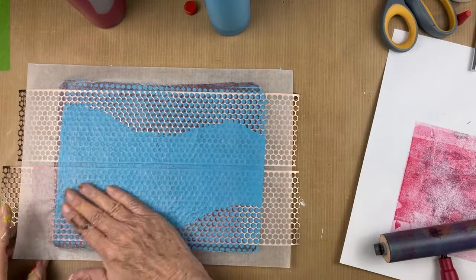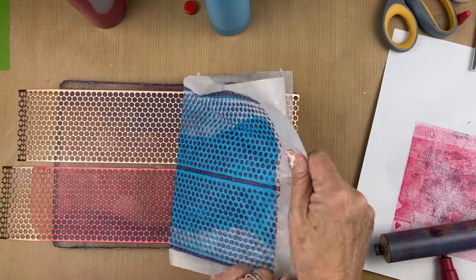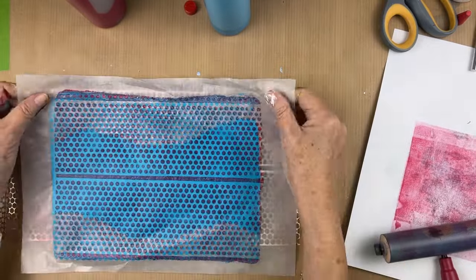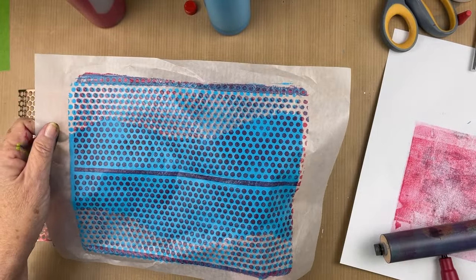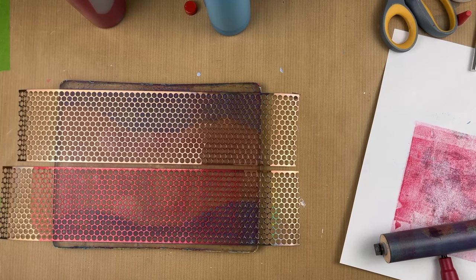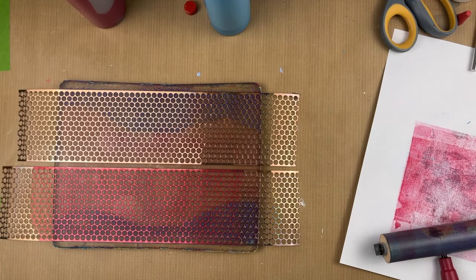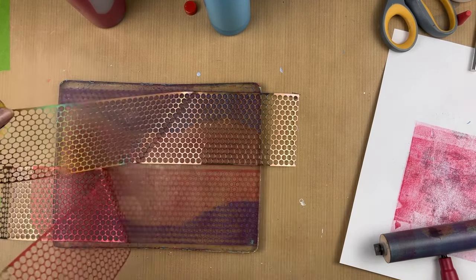As you can see, my circles are sort of offset, so it's giving us that really cool printer offset when it's not quite registered look.